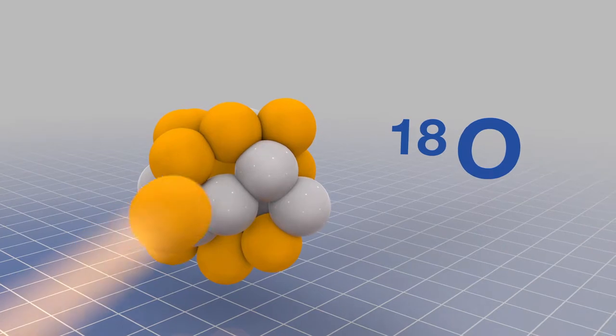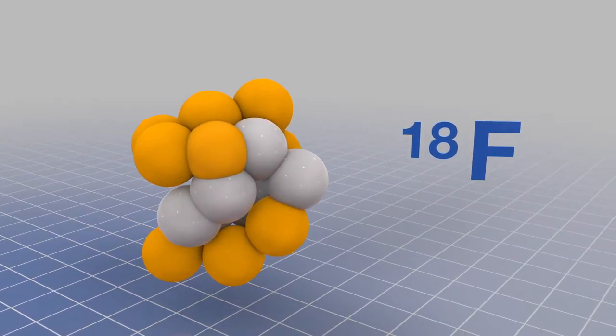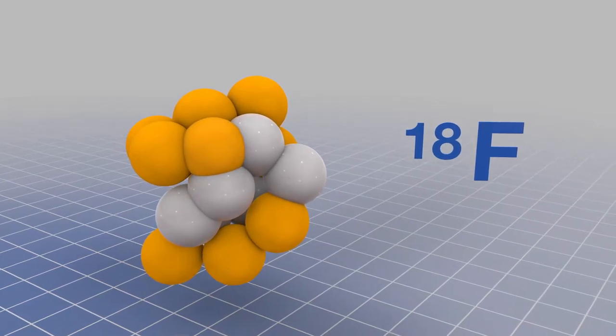As a proton with high energy collides with it and enters the nucleus, a neutron is released instead, and it becomes the isotope of fluorine 18.